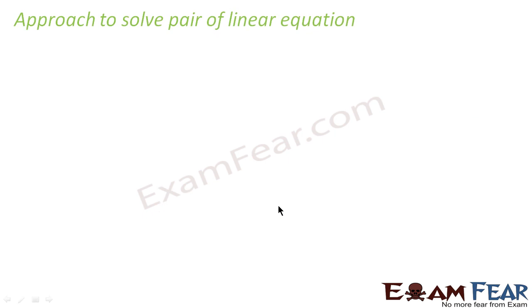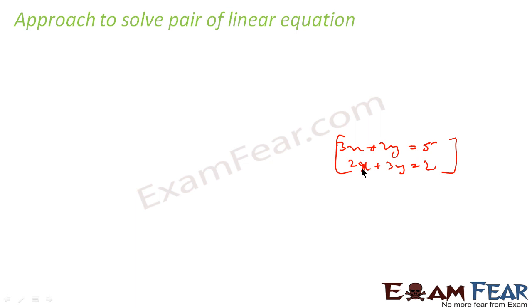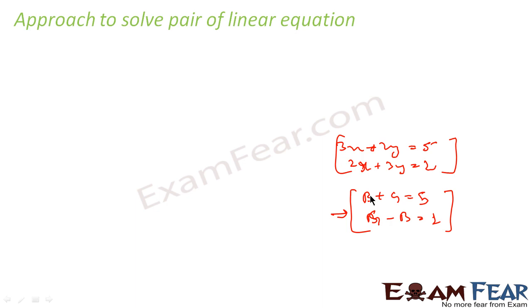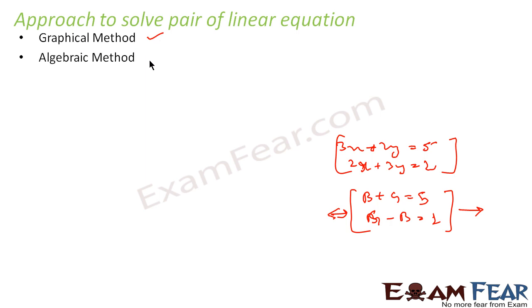Now let's look at the approach to solve a pair of linear equations. For example, 3x plus 2y equals five and 2x plus 3y equals two, or the earlier example of boy plus girl equals five and girl minus boy equals one. There are two approaches: the first is the graphical method, and the second is the algebraic method. We will explain both of these, starting with the graphical method.